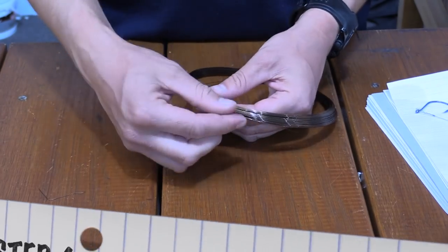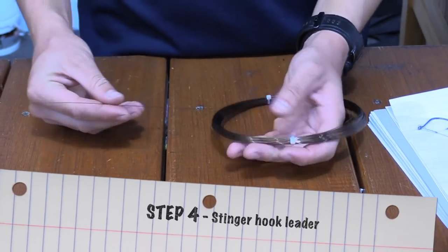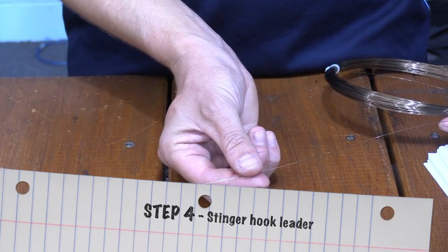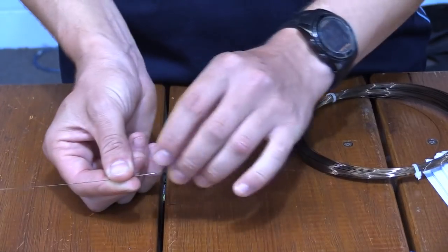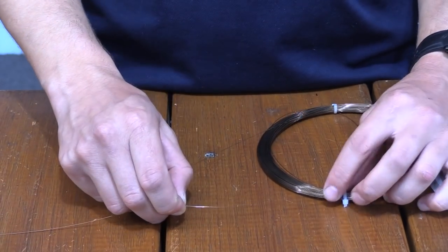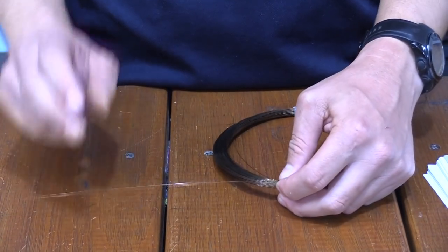So following on from that, you'll need your second piece of wire. You need to make sure you've got an adequate tag length on either side. So that's roughly one tag length and you've got your main line section to your other section and then you'll need another tag length so that should be enough wire there.